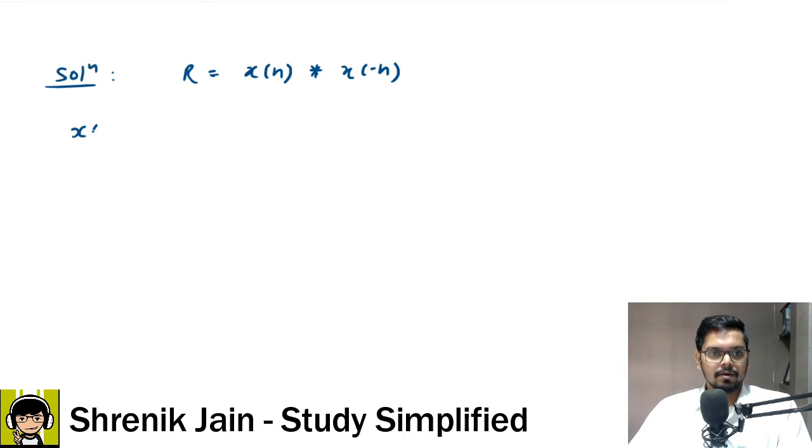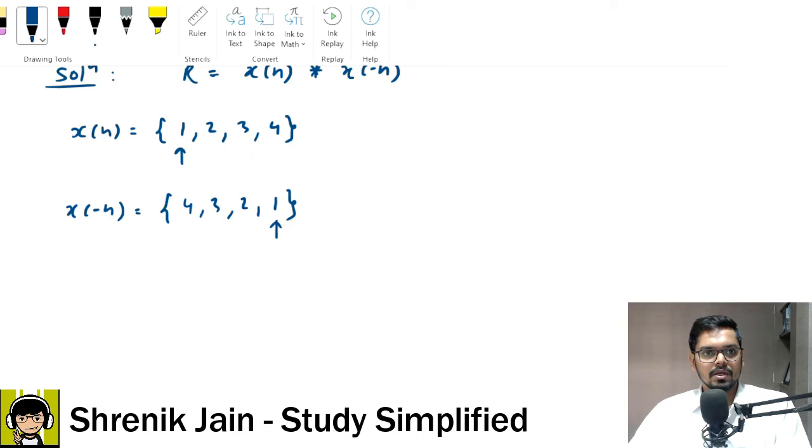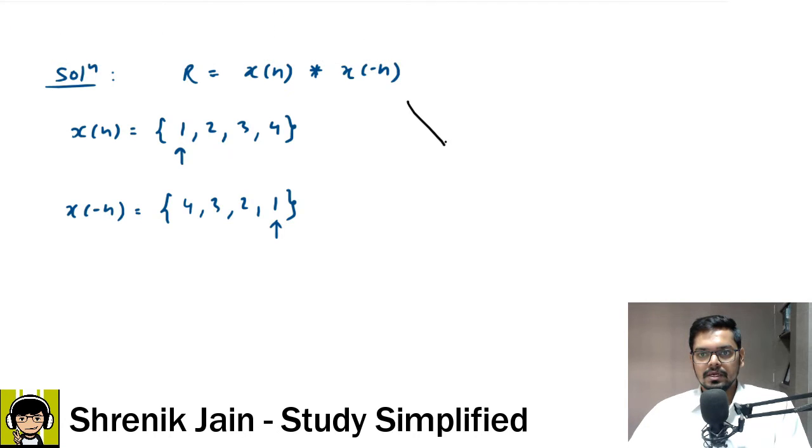Let us see. First step, autocorrelation function is equal to X of N convolved with X of minus N. So, autocorrelation concept is asked twice in 2024, it becomes important now. See carefully, X of N is equal to 1, 2, 3, 4, where the arrow is at the start. Therefore, X of minus N would be what? All this player will go to the left, it's the mirror, right?